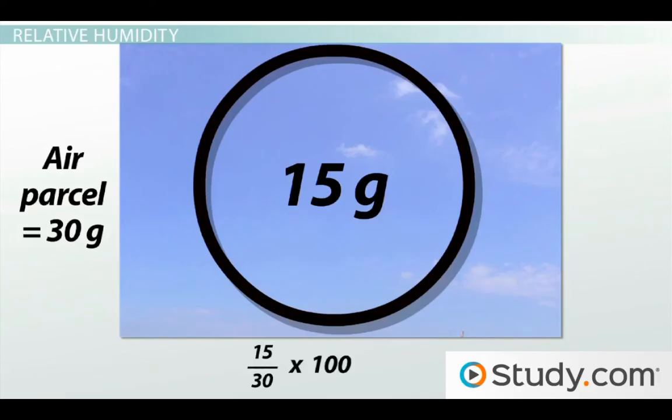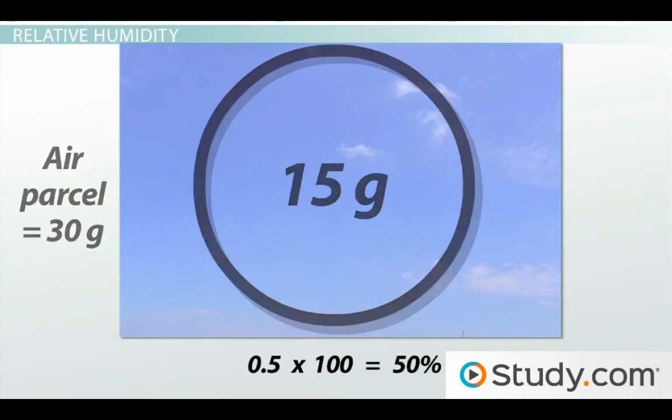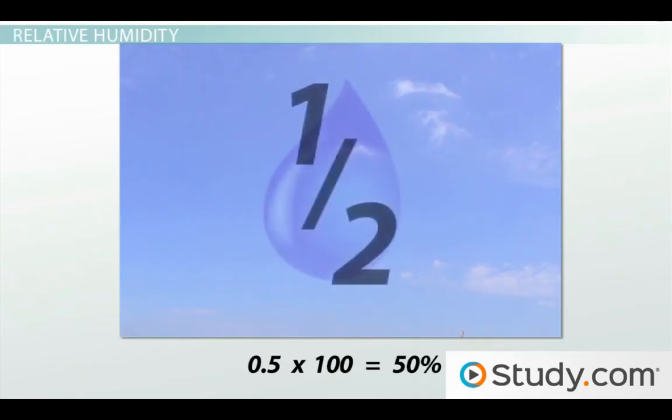So in this case, 15 divided by 30 equals 0.5, multiplied by 100 gives us 50%. So the relative humidity is 50%, which means the air contains about half of the total water vapor it could possibly hold.